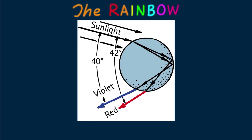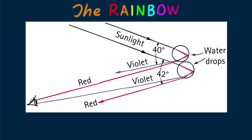After two refractions and a reflection, the outgoing light can make an angle with the incoming rays of anywhere from 0 degrees to a maximum of 42 degrees, depending upon where the light strikes the droplet. For a head-on ray at the middle of the droplet, the light is sent straight back at 0 degrees. Light striking near the edge makes an angle close to 42 degrees. Although each drop disperses a full spectrum of colors, an observer sees concentrated light of only a single color from any one drop. Red light is seen when the angle between sunlight and the returned light is 42 degrees; violet is seen at 40 degrees.